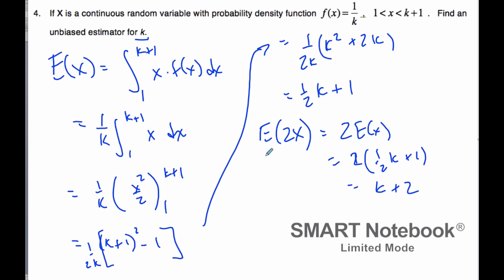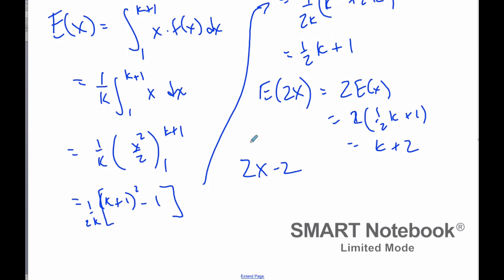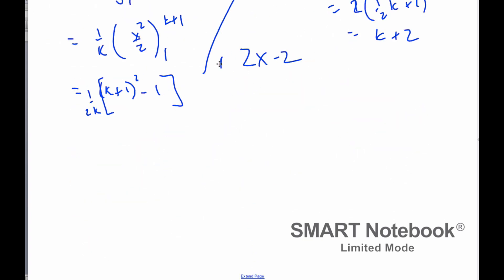To get rid of the 2, I'll try 2X minus 2. If I do the expected value of this statistic, I get 2 times E(X) minus 2, which is 2 times ((1/2)k plus 1) minus 2, which equals k plus 2 minus 2, which is k.